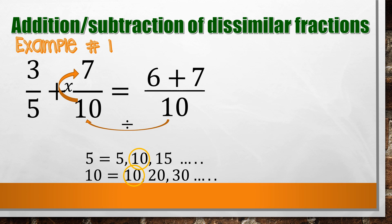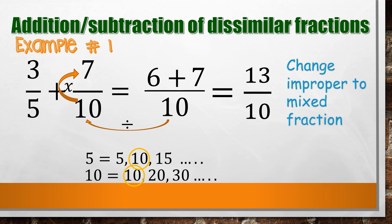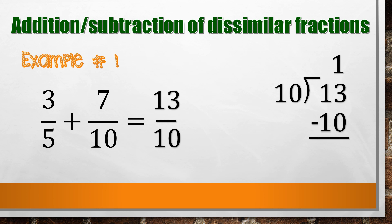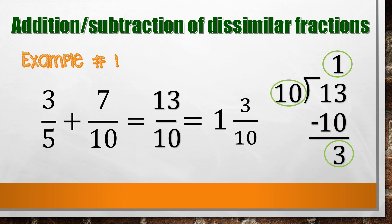Since we now have similar fractions, we add the numerators and copy the denominator. The result is an improper fraction, so we change it to a mixed number by dividing the numerator by the denominator. The answer is 1 and 3/10.